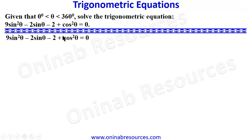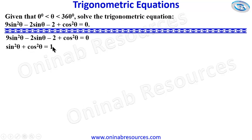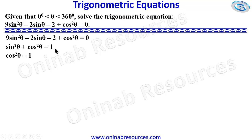We are going to use trigonometric identities to substitute either sin²θ or cos²θ. We know that sin²θ + cos²θ = 1. We either make sin²θ or cos²θ the subject of this identity. In this situation it is better to make cos²θ the subject, since every other term will then be in sine. So we have cos²θ equal to 1 - sin²θ.